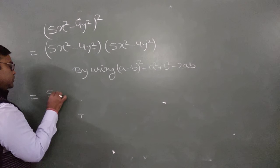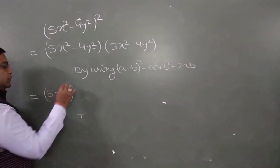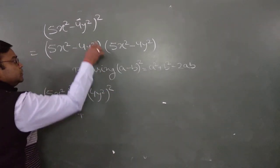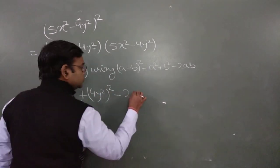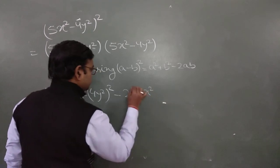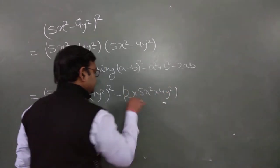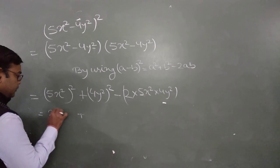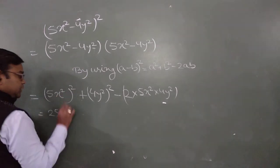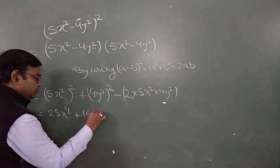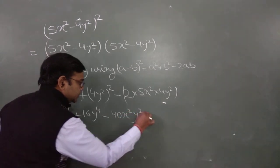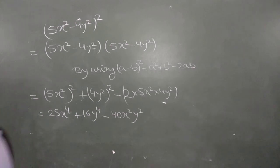So: first term squared is (5x²)² = 25x⁴. Second term squared is (4y²)² = 16y⁴. And minus 2 times first term times second term: 2 times 5x² times 4y² = 40x²y². So the result is 25x⁴ plus 16y⁴ minus 40x²y².